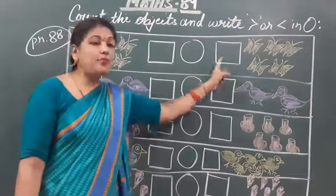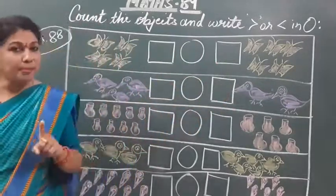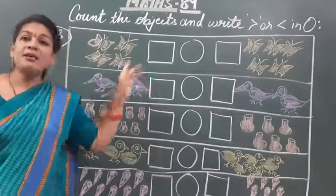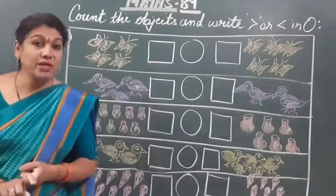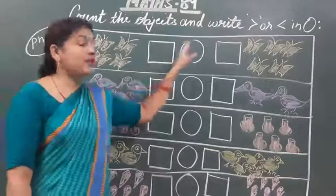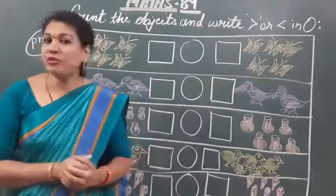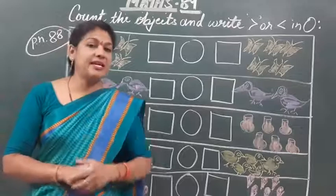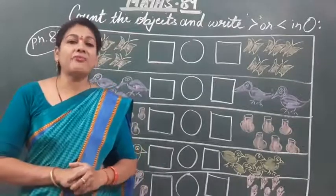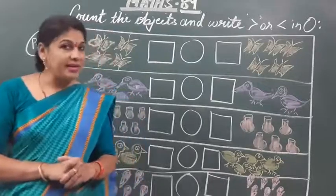Here are square boxes given for writing the numbers. Some objects are already given there and we will first count them — how many objects are given there? First we will write the numbers, then we will identify which one is greater than and which one is less than. Then the last remaining work is to put the correct sign. Okay, let us start.